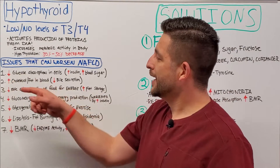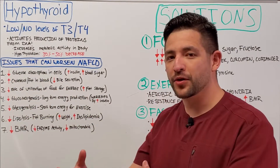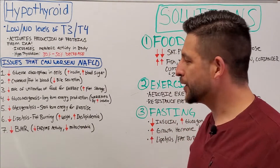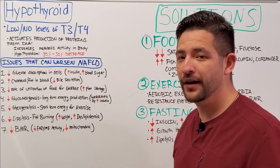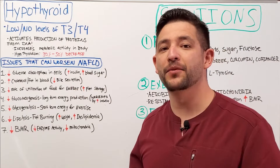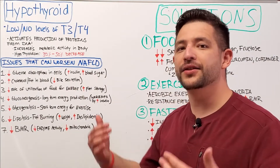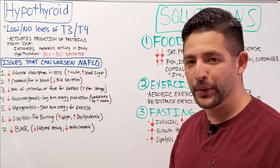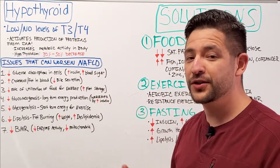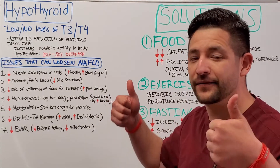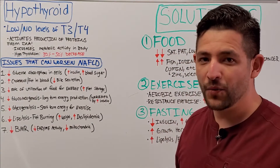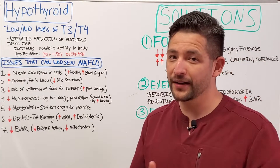The first issue is that your cells' ability to absorb glucose from the bloodstream goes down — your cells have a harder time pulling glucose, or blood sugar, from the bloodstream. This is important because when this happens, your pancreas has to secrete more insulin to force your cells to pull that glucose in, which can lead to hyperinsulinemia — too-high levels of insulin in your blood — which can then contribute to insulin resistance, one of the major factors in developing a fatty liver.